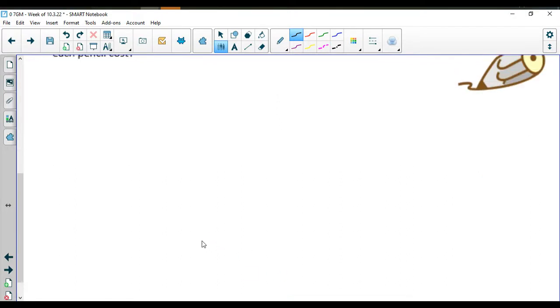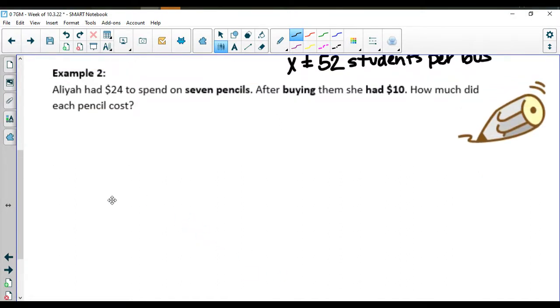In example number two, Aaliyah had $24 to spend on seven pencils. After buying them she had $10. When everything was done she was left with 10. That sounds like an equals number to me.